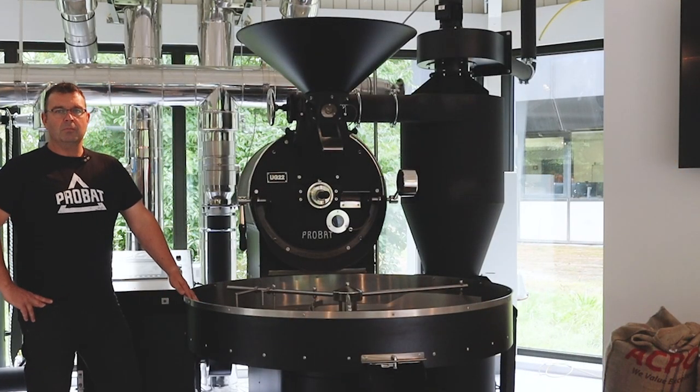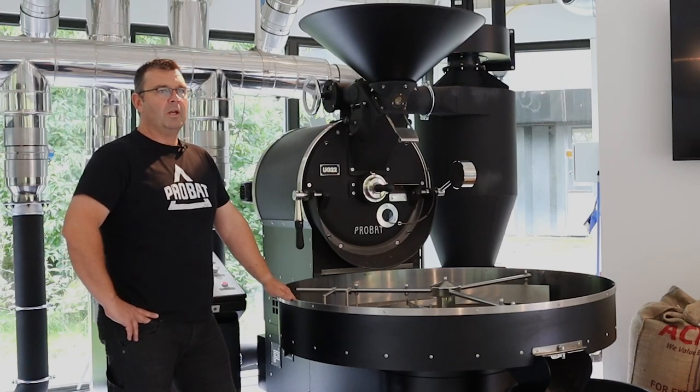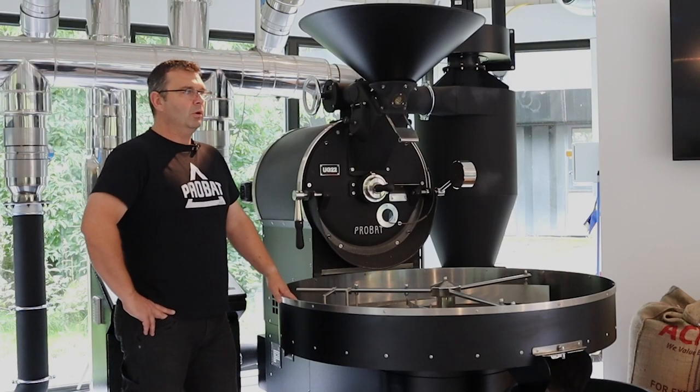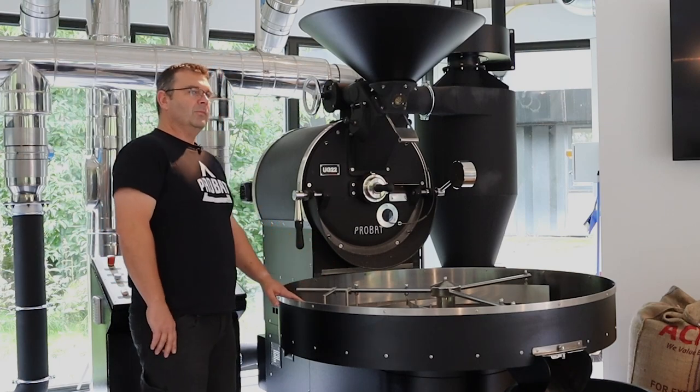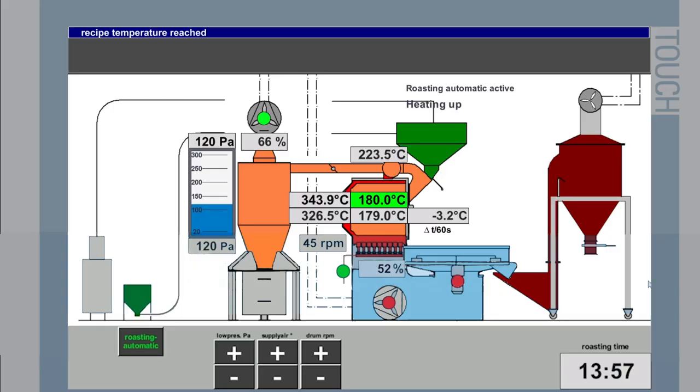So, we are at the moment in a preheating mode or a between batch mode, both is the same. I would like to show you all the options we have. We have some buttons from F1 to F10. The first side is on F1. You can see the whole roaster, the vacuum system, the pressure system and all the drives. Each drive is red or green which means it operates or is off.